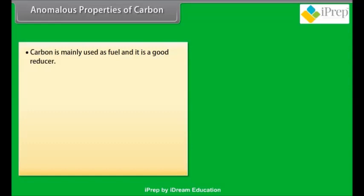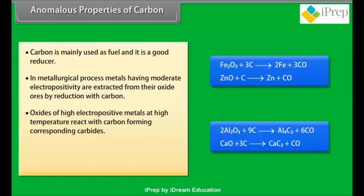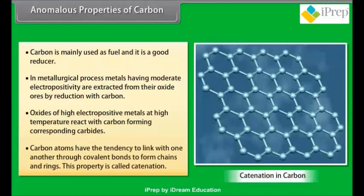Anomalous properties of carbon: carbon is mainly used as fuel and it is a good reducer. In metallurgical processes, metals having moderate electropositivity are extracted from their oxide ores by reduction with carbon. Oxides of high electropositive metals at high temperature react with carbon forming corresponding carbides. Carbon atoms have the tendency to link with one another through covalent bonds to form chains and rings. This property is called catenation.